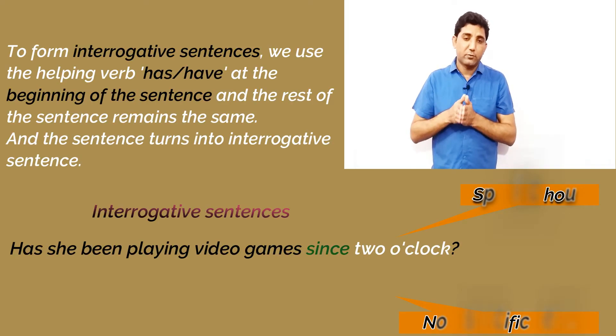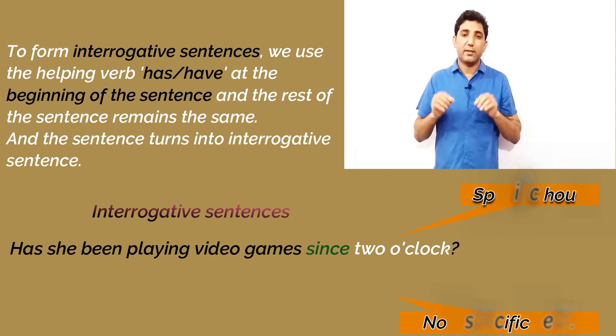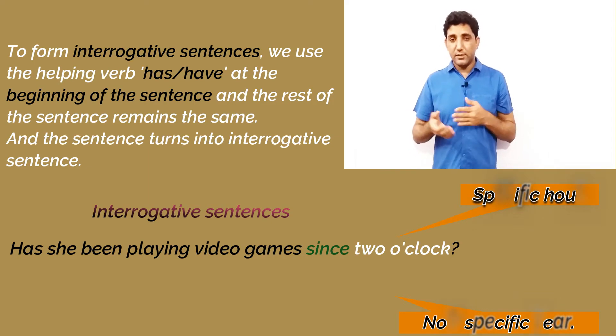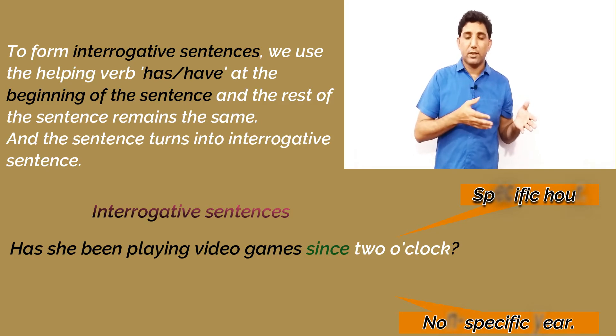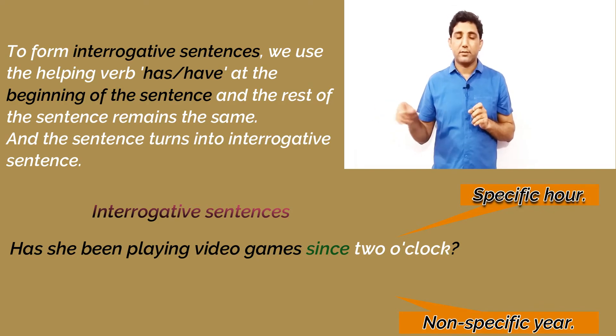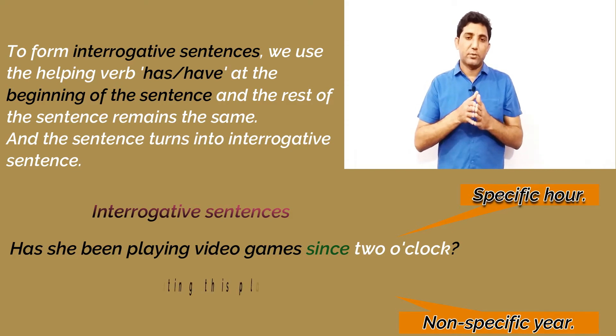Now let's learn how to form interrogative sentences. In interrogative sentences, we pick the helping verb 'has' and bring it to the beginning of the sentence; the rest of the words remain the same. For example, the statement 'she has been playing video games since two o'clock' turns into: has she been playing video games since two o'clock?